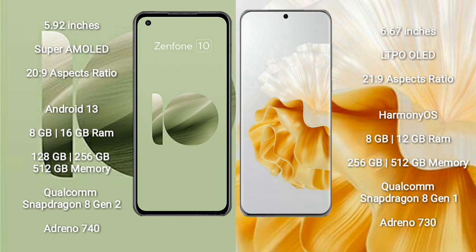The Asus Zenfone 10 comes with 8GB or 16GB RAM and 128GB, 256GB, or 512GB internal storage, powered by the Qualcomm Snapdragon 8 Gen 2 processor with an Adreno 740 GPU. The Huawei P60 Pro comes with 8GB or 12GB RAM and 256GB or 512GB internal storage, powered by the Qualcomm Snapdragon 8 Gen 1 processor with an Adreno 730 GPU.